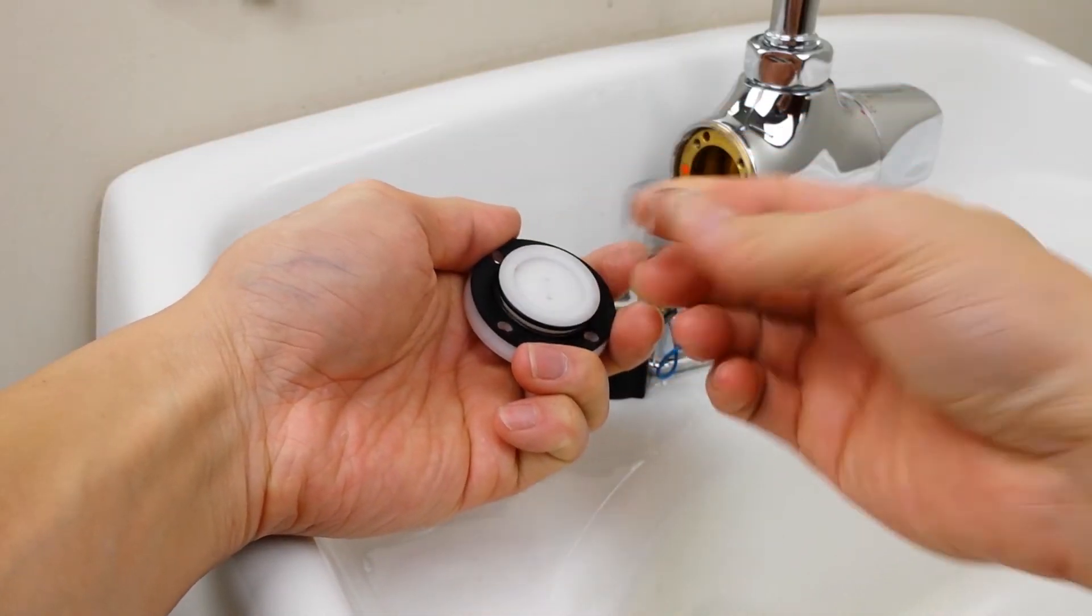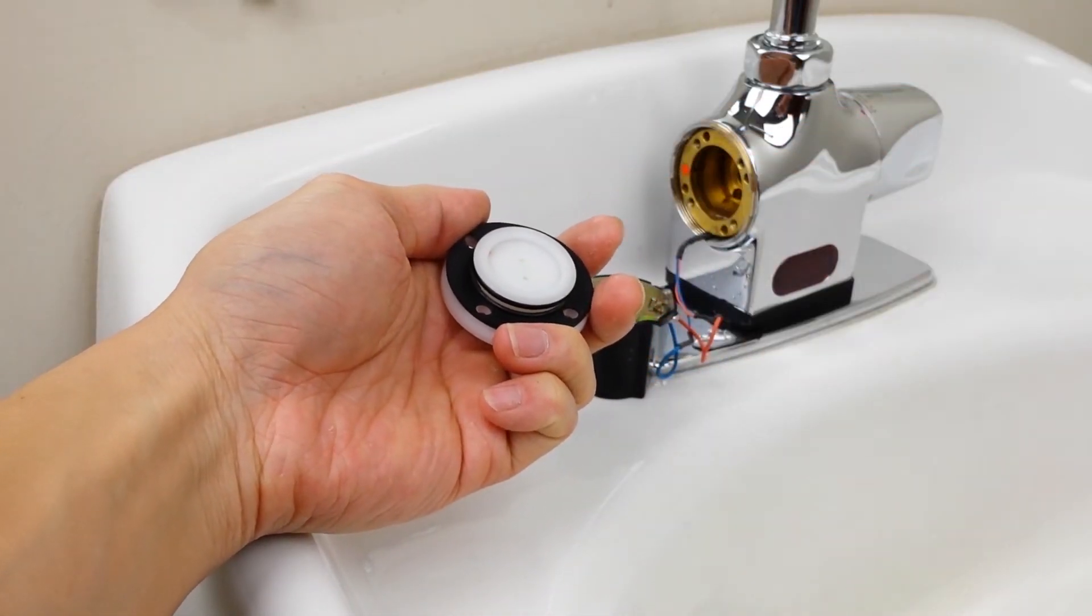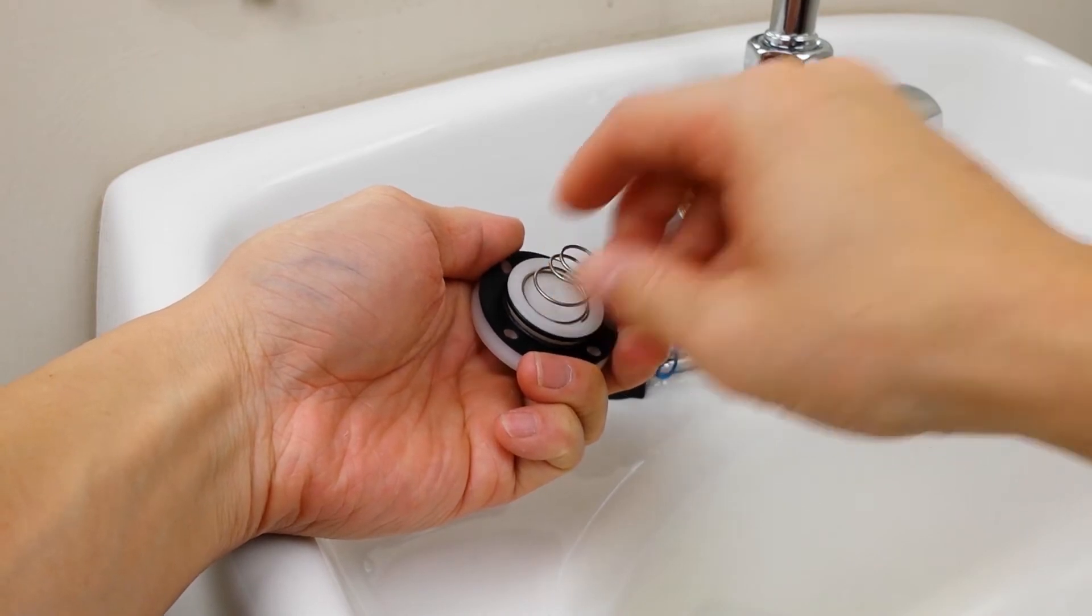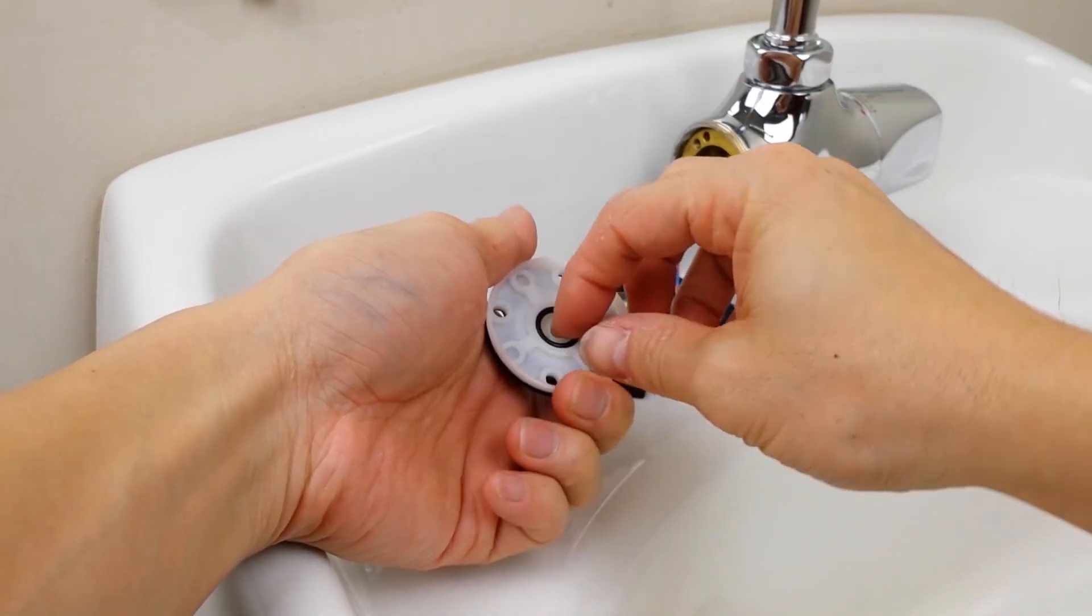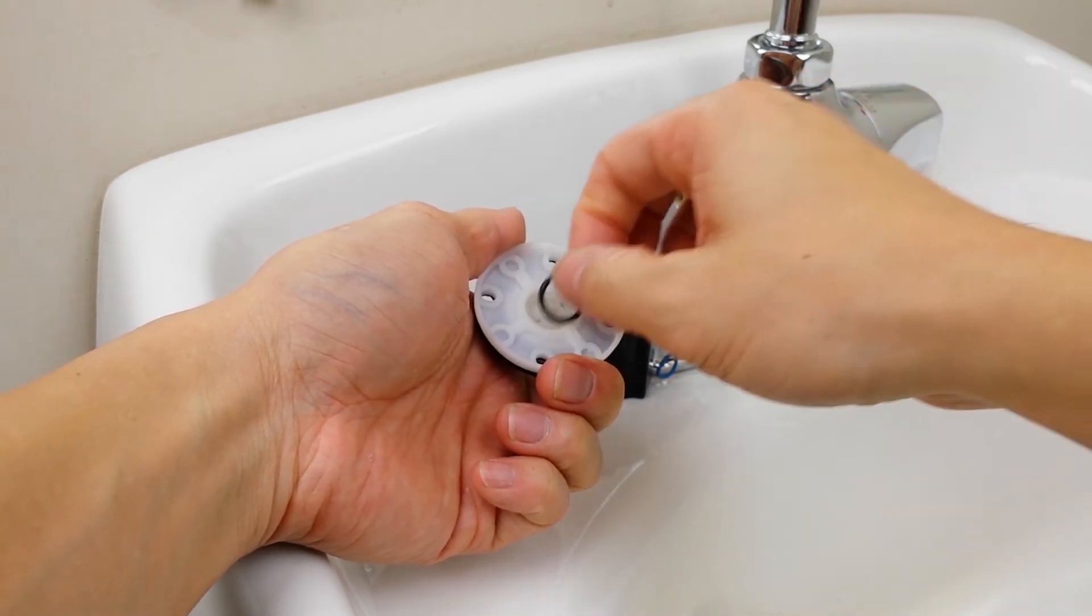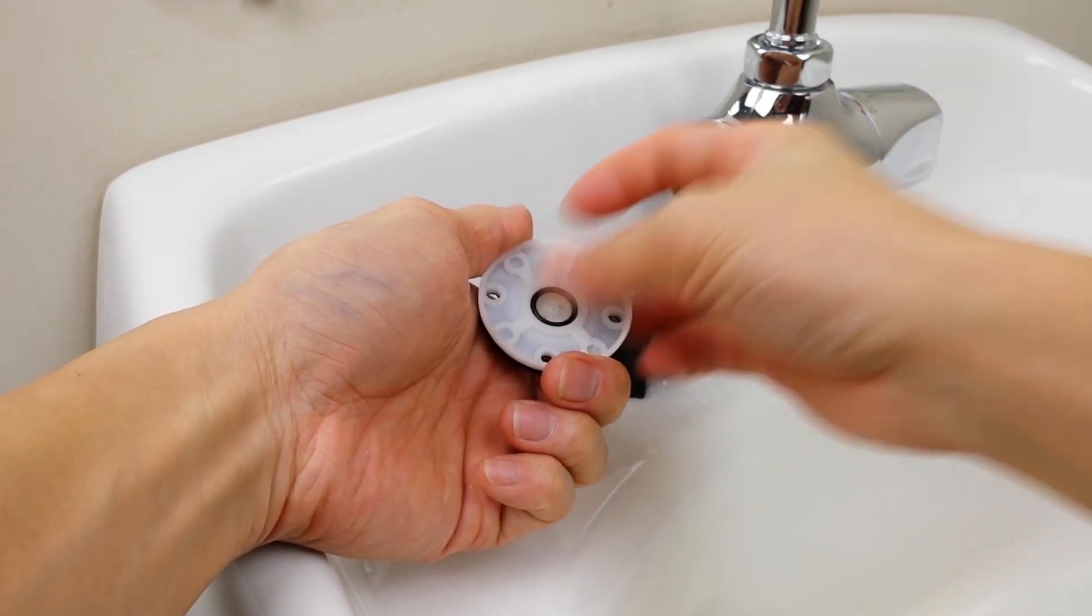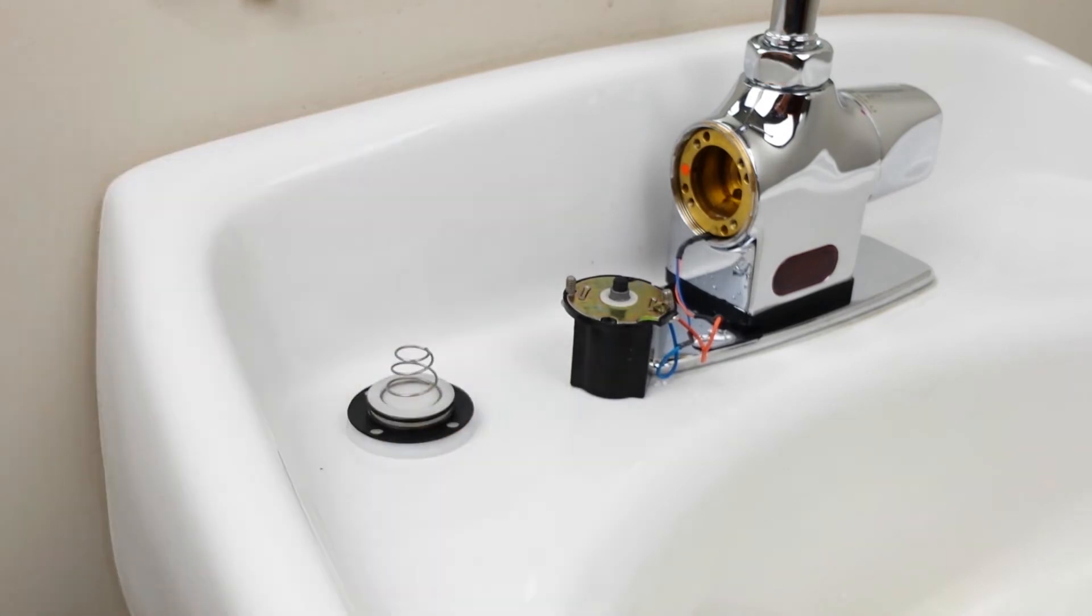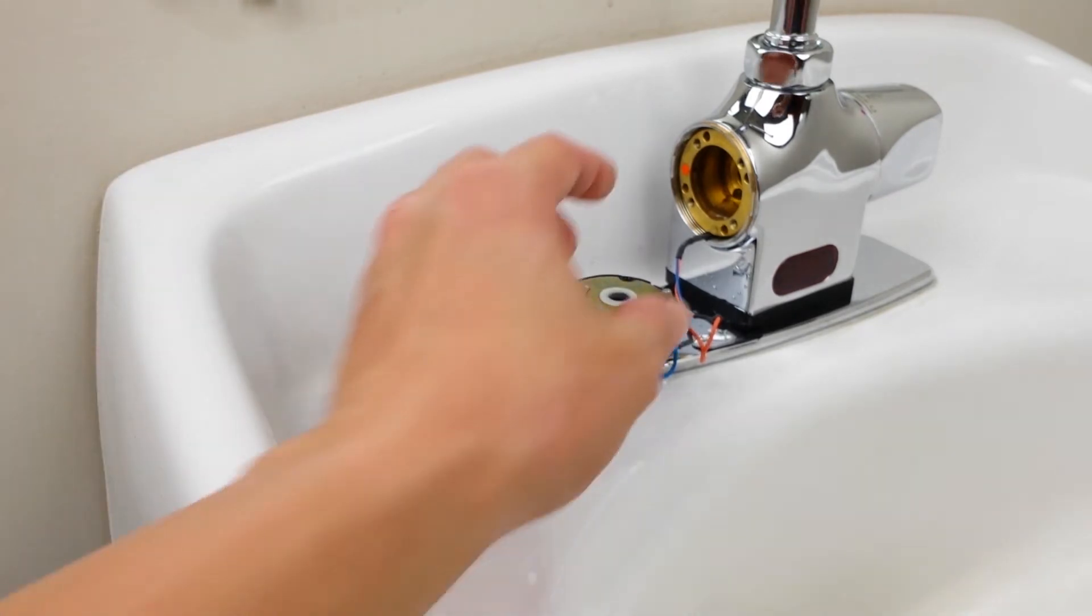Take the HCB017B solenoid valve repair kit and replace the cone-shaped spring, O-ring and the piston and piston spring.